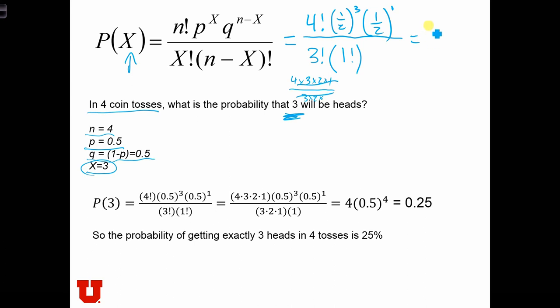So we have 4 times, and a half to the third times a half is just a half to the fourth. And the 1 factorial is just equal to 1, so we don't need to keep track of the denominator anymore.